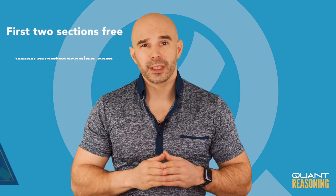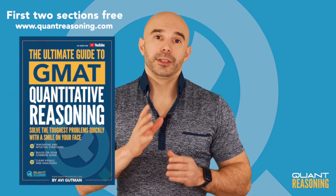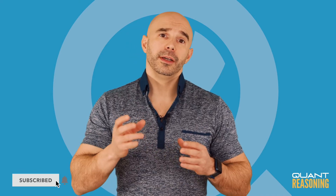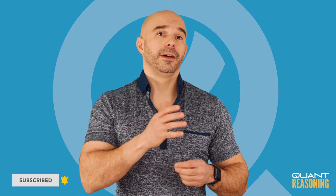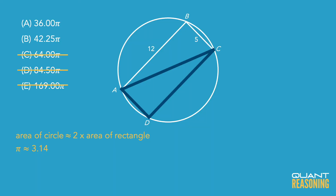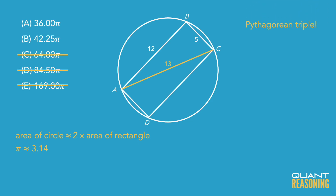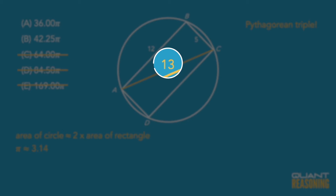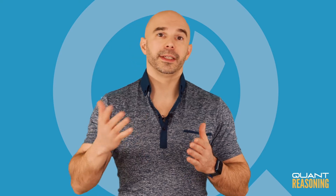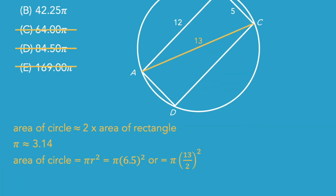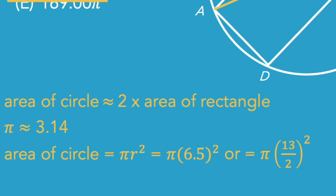I go a bit more deeply into that theory in my book, so you can check that out if you're interested. Now, if you've memorized your Pythagorean triples — which you should; you can find them by googling or in my book — you'll know that one of those triples is 5, 12, 13. So we have here a right triangle with a side of 5 and a side of 12, which means that the diagonal of the rectangle, also known as the diameter of the circle, is exactly 13 units long. We know that the area of a circle is pi times the radius squared, but the radius is half of the diameter — and the diameter is 13 — so the radius is half of 13.